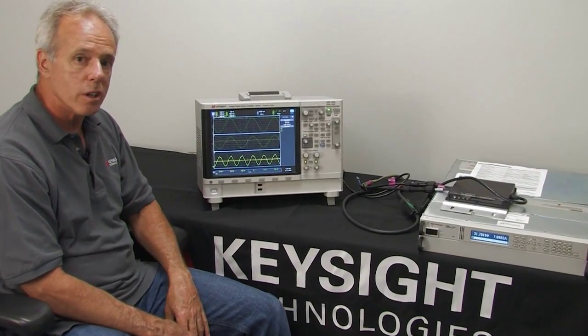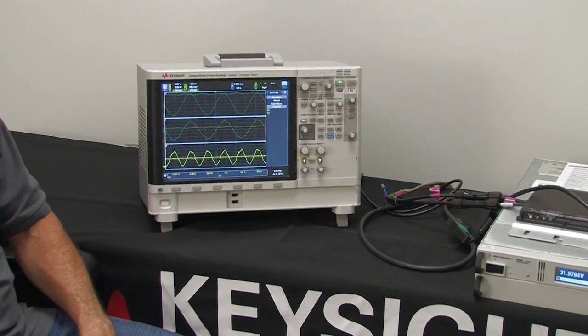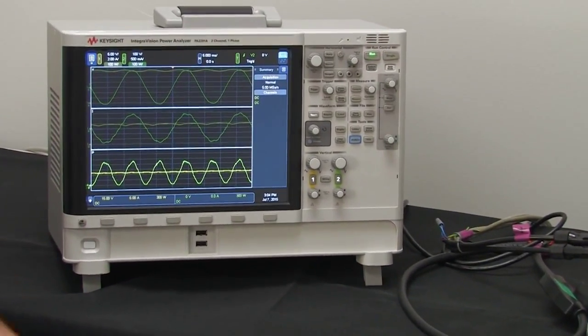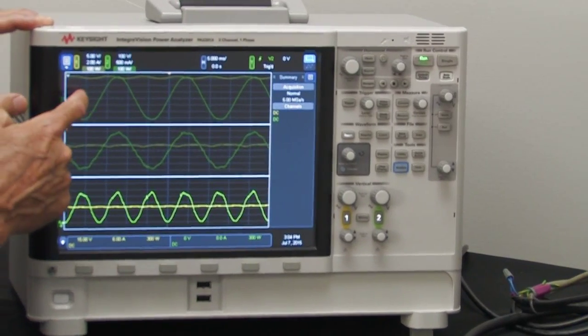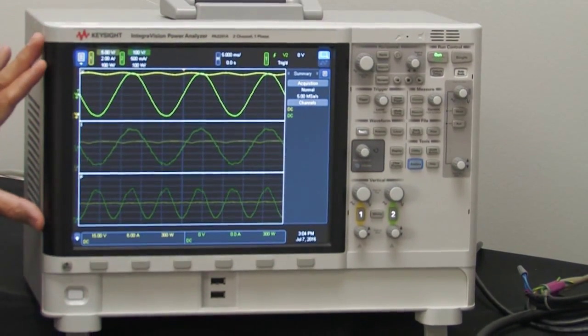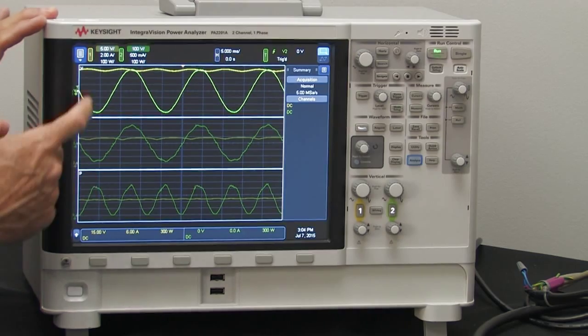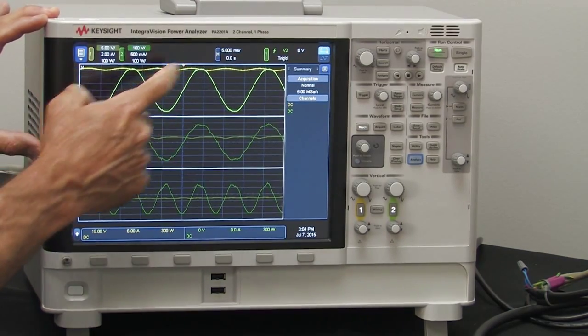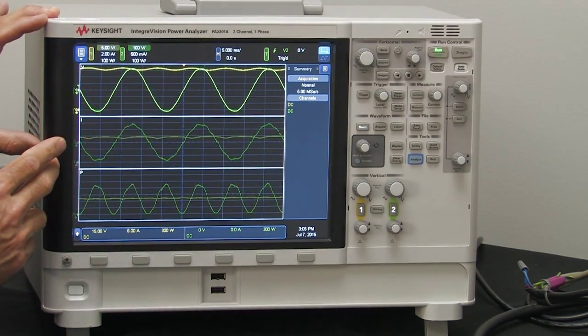So let's take a look at what the IntegraVision power analyzer is doing at the moment. Right now the screen is divided up into three different sections. The top section shows the input voltage is the yellow and the green is the output AC voltage.